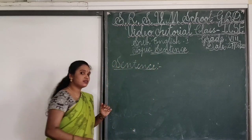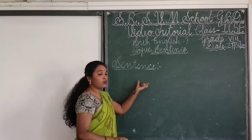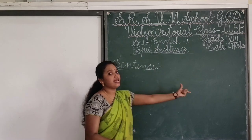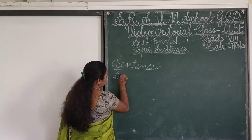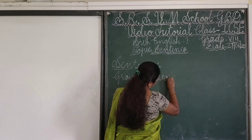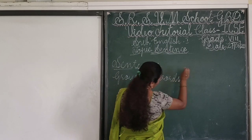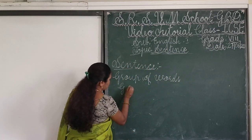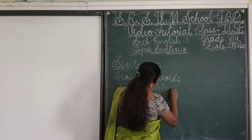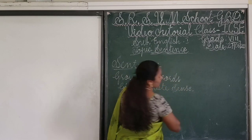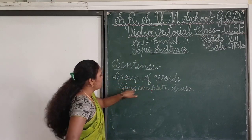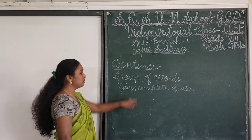A sentence means a group of words together which gives a complete sense. A sentence means a group of words which makes or gives complete sense. Did you get me? So, a sentence means it's a group of words that makes a complete sense. So, it is said to be a sentence.